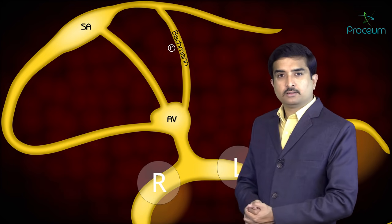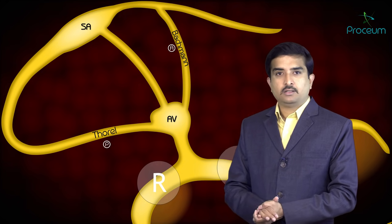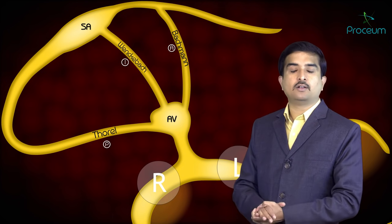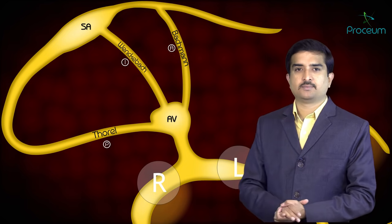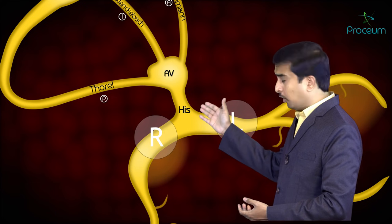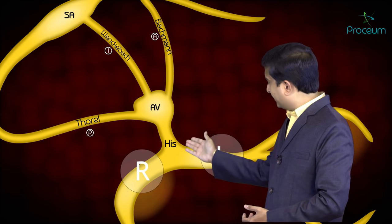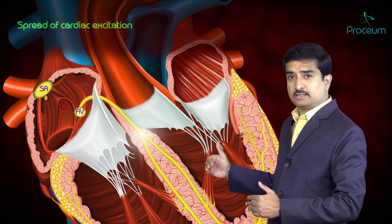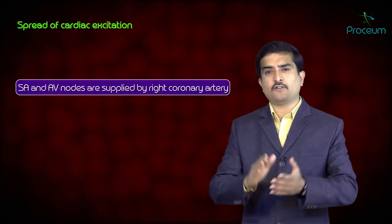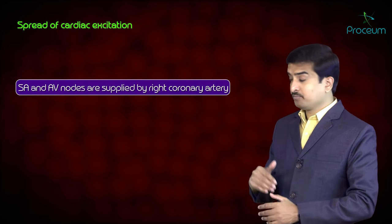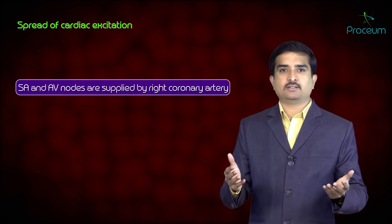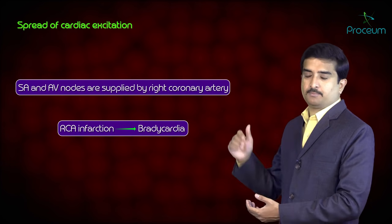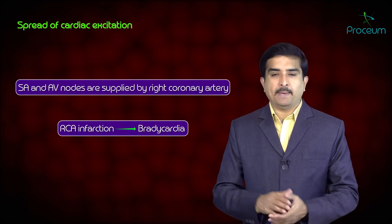The anterior internodal fiber is called Bachmann's bundle, the posterior is called Thorel's, and the intermediate one is called Wenckebach's. The bundle of His is the only electrical connection between the atria and the ventricles. In the majority of cases, both the SA node and AV node are supplied by the right coronary artery, which is why right coronary artery infarction can cause bradycardia.